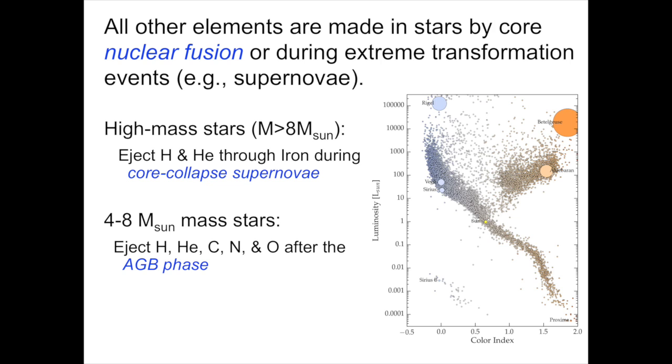Four to eight solar mass stars, what we would call intermediate mass stars, at the end of their lives eject hydrogen, helium, and small amounts of carbon, nitrogen, and oxygen after they reach the end of their asymptotic giant branch or AGB phase. And finally, low mass stars, stars with masses less than about four times the mass of the sun, eject their hydrogen and helium envelopes at the end of their asymptotic giant branch phase, leaving behind a core carbon-oxygen white dwarf and sending out their envelopes with hydrogen and helium that they were born with, plus a very small amount of helium and perhaps a little bit of carbon, nitrogen, and oxygen made during the last phases of the star's life when the products of nucleosynthesis in the hydrogen and helium shells can be dredged up and make their way into the envelopes.